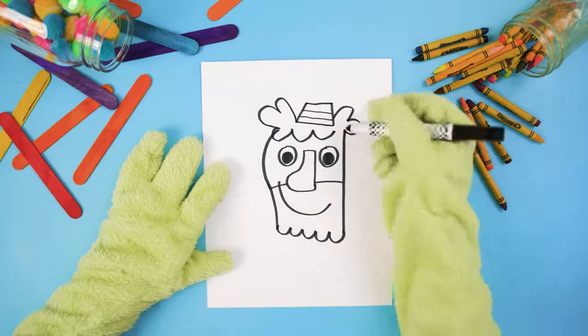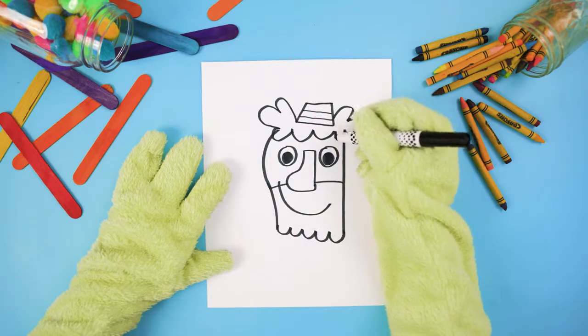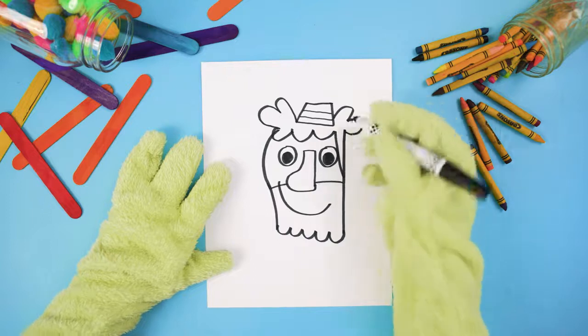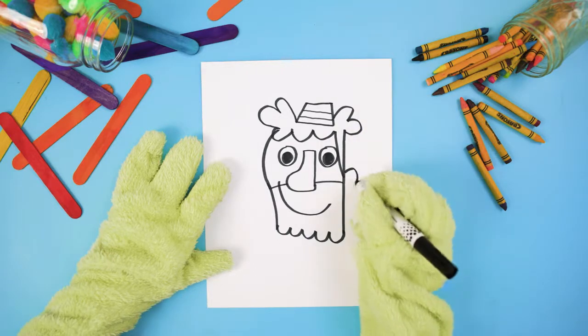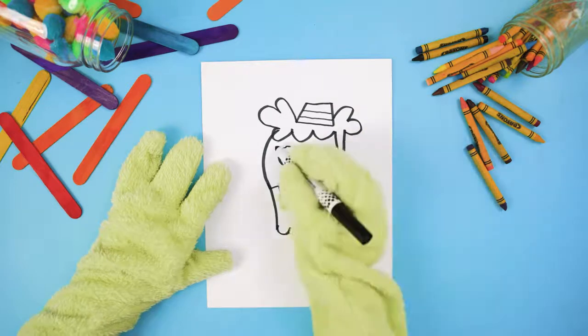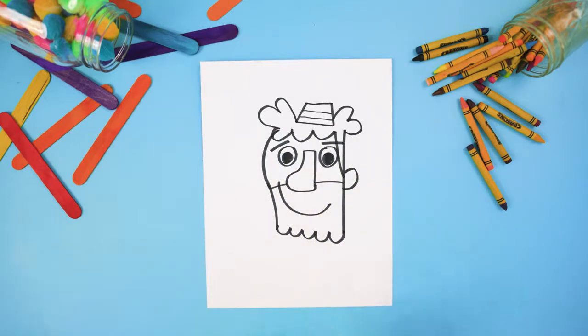Oh, but wait, on the last bump draw a long line that goes all the way down to his beard. And let's draw a little ear on that side right here. Okay, now to finish up we just need two straight lines above his eyes.